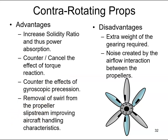However, there are some disadvantages. The first is the addition of gearing required to rotate one propeller in the opposite direction — if one engine is driving both propellers, we need gearing so one is a left-hand and one is a right-hand propeller. The second disadvantage is the noise generated by the interaction between the propellers. As the blades pass one another, the interaction between the airflow can be quite noisy. So counter-rotating propellers can be noisy.